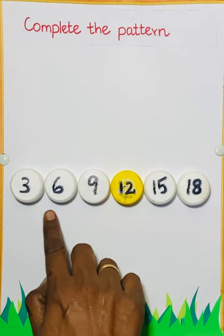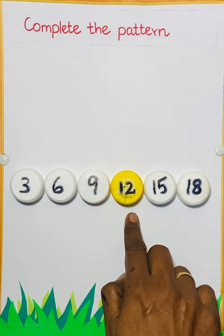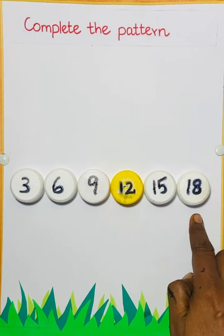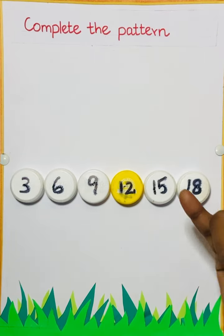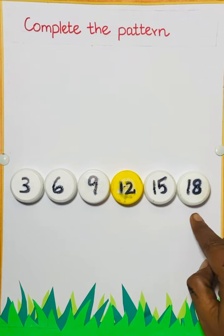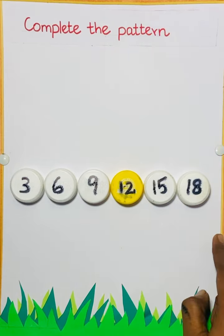Now read the numbers. 3, 6, 9, 12, 15, 18. Then after 18, 19, 20, 21. So skip counting of 3 or the multiples of 3.